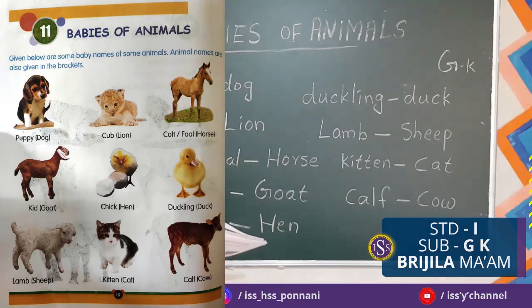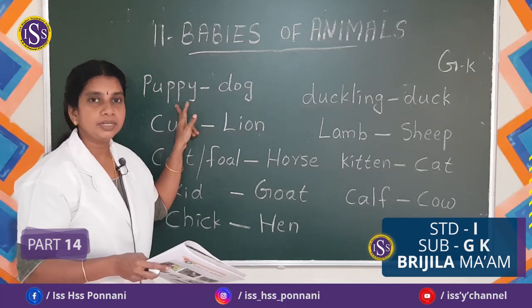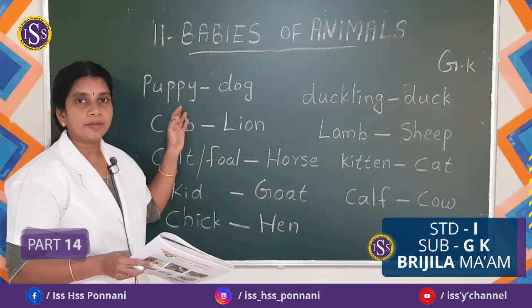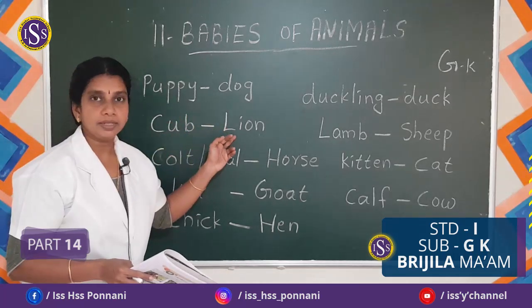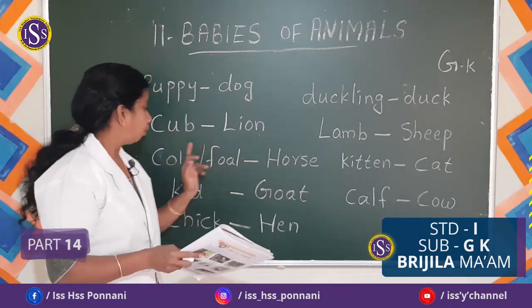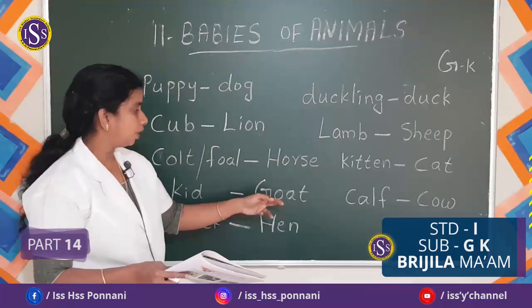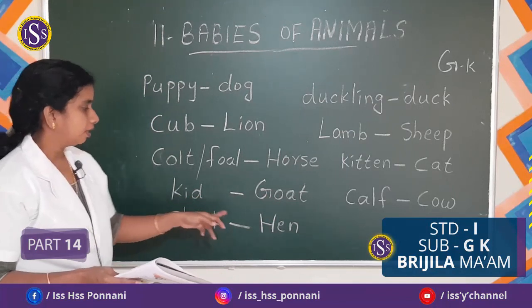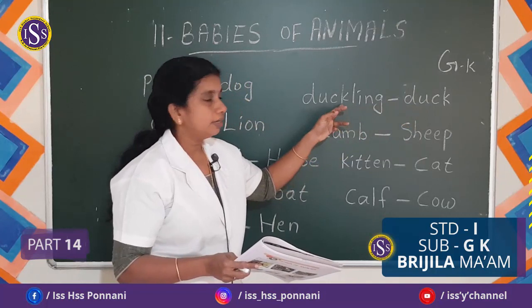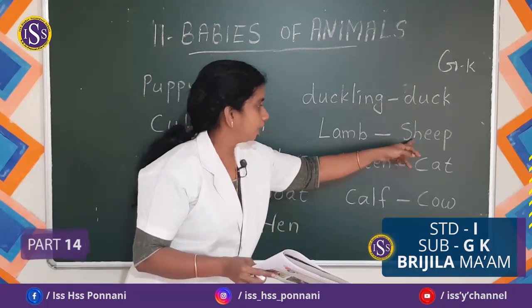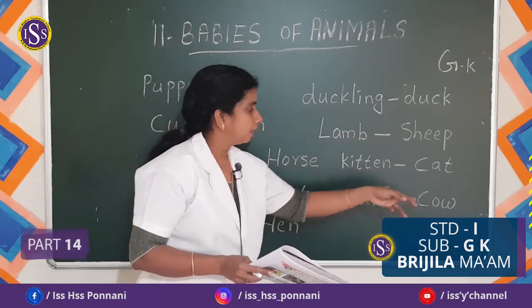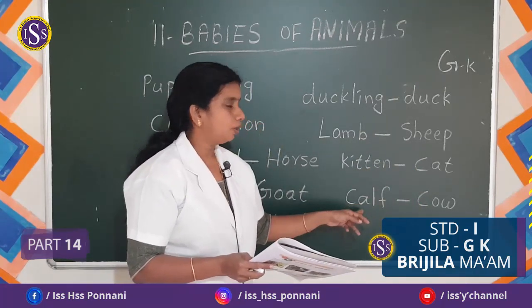Come on, all get up. Let's review: Dog — Puppy. Lion — Cub. Horse — Colt or Foal. Goat — Kid. Hen — Chick. Duck — Duckling. Sheep — Lamb. Cat — Kitten. Cow — Calf.